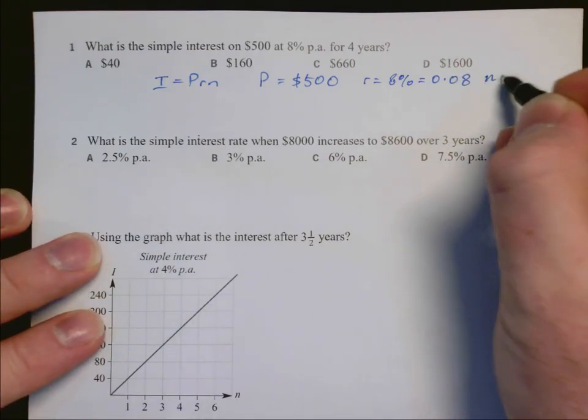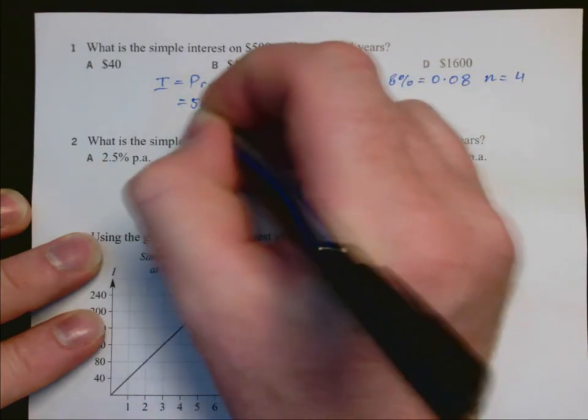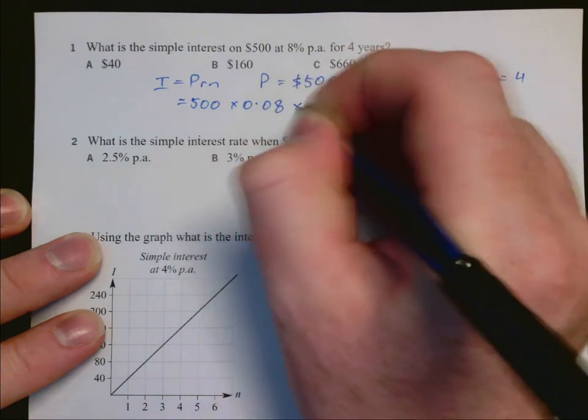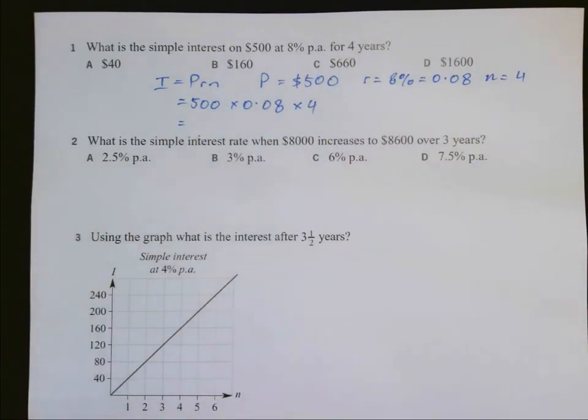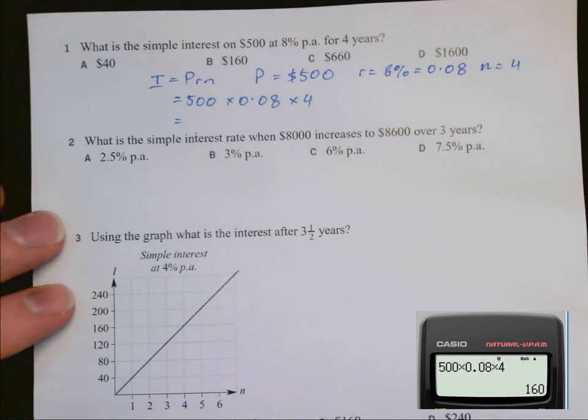And N is 4 years. So putting those into the equation: 500 times 0.08 times 4. Using our calculator, we get $160.